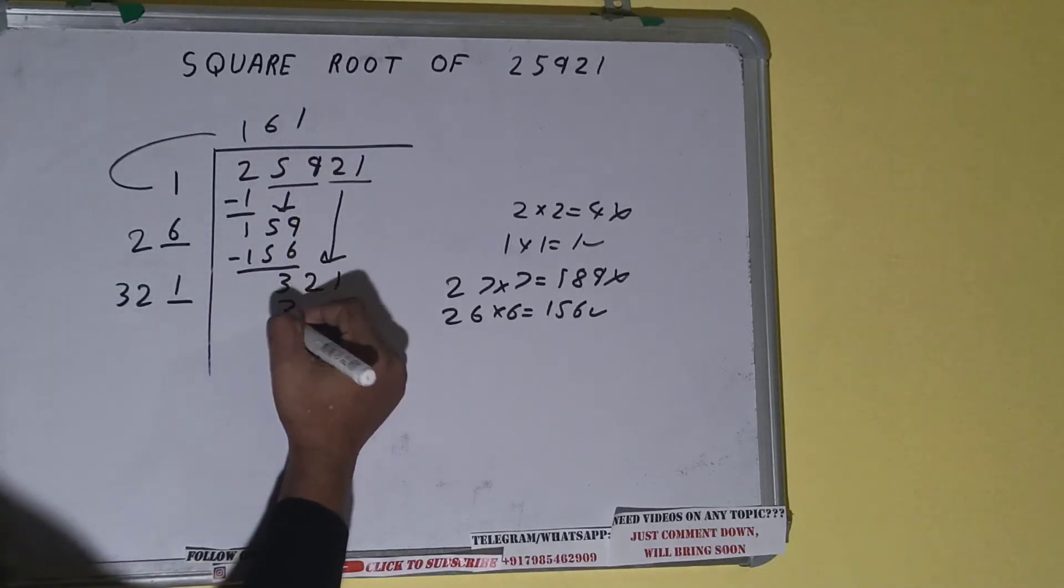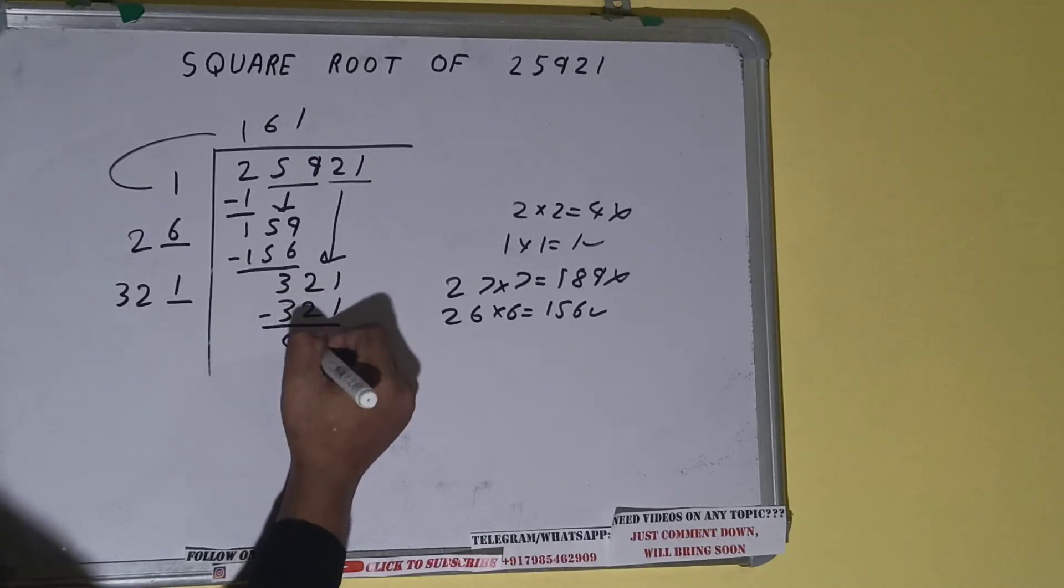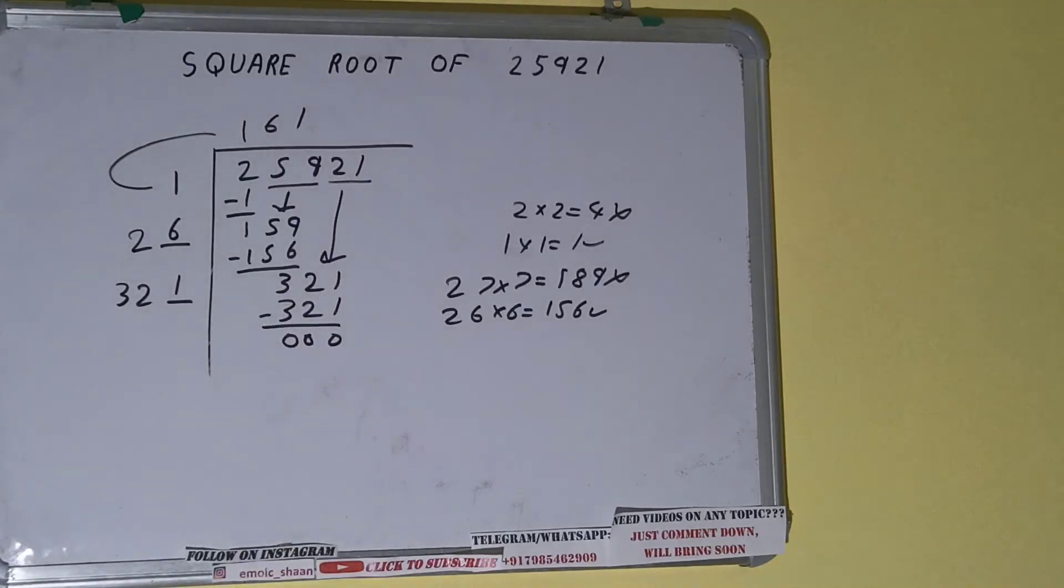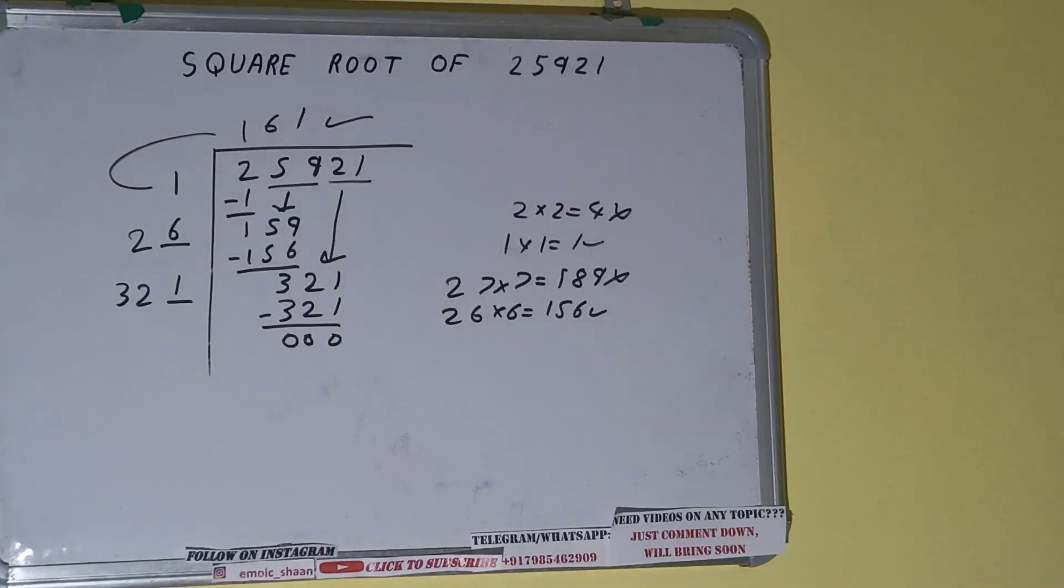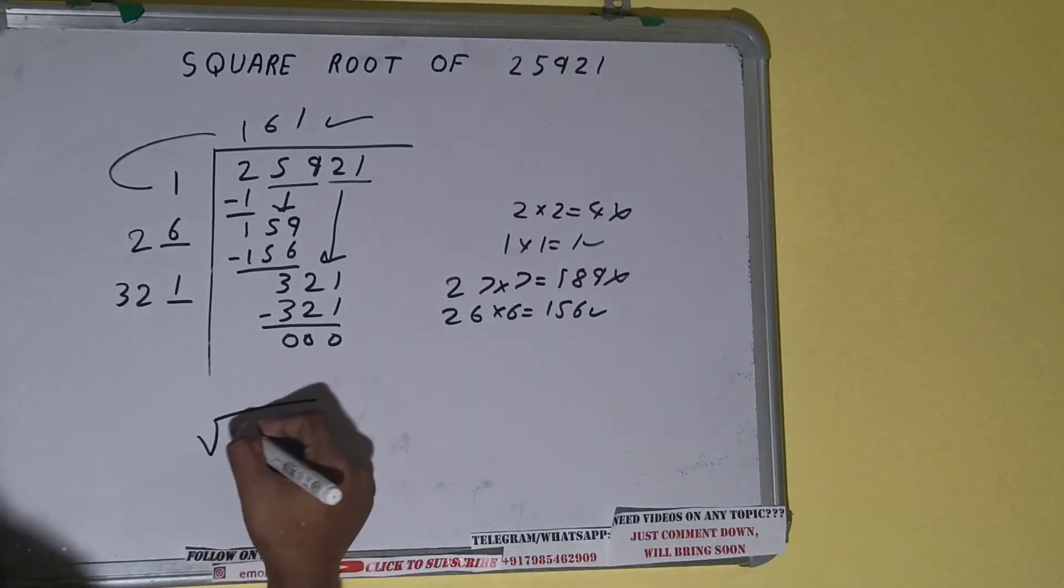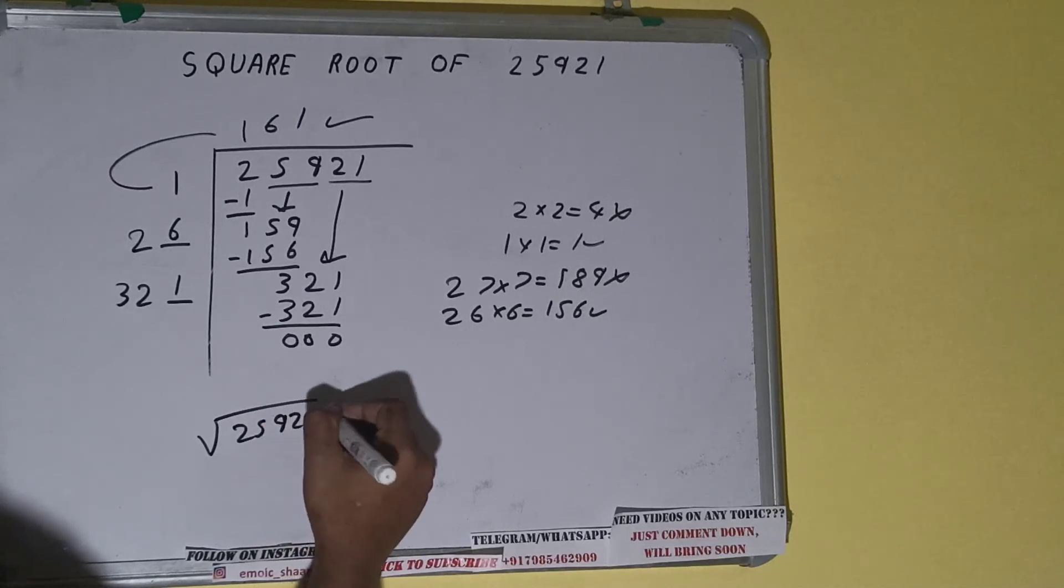So if we write one here and one here, we'll be getting 321, and on subtracting we'll be having zero. Once we get zero, whatever is in the question—that is 161—will be the answer. So square root of 25921 will be 161.